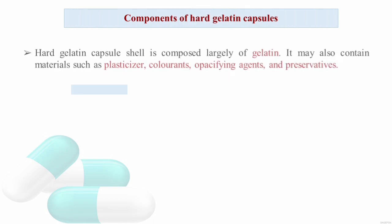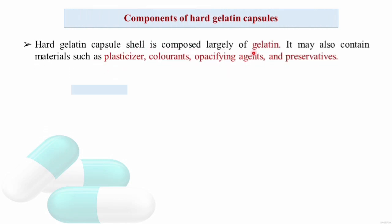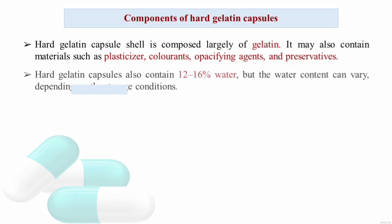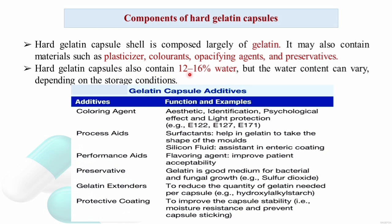The composition of the hard gelatin capsule shell: the shell is largely composed of gelatin, which is the main ingredient. It may also contain plasticizers, colorants, opacifying agents, and preservatives. Hard gelatin capsules contain 12 to 16 percent water, but this content can vary depending on storage conditions. Additives include coloring agents for aesthetic identification, surfactants like sodium lauryl sulfate to help gelatin take the shape of molds, and silicone fluid for anti-stick coating.